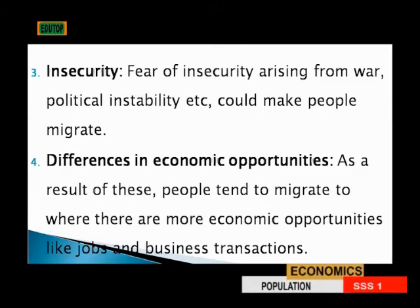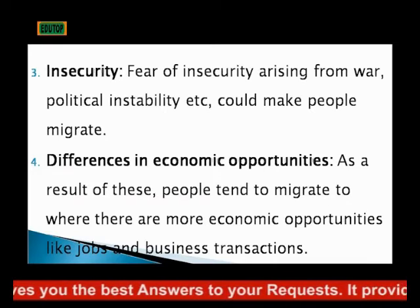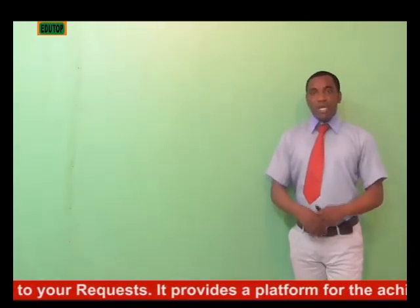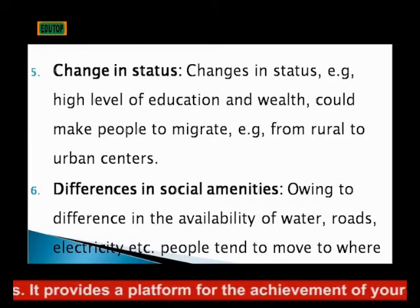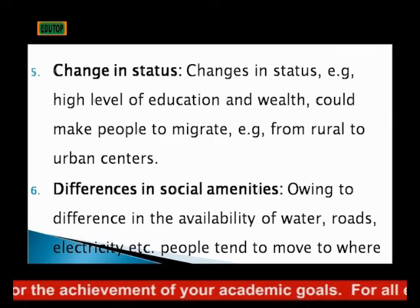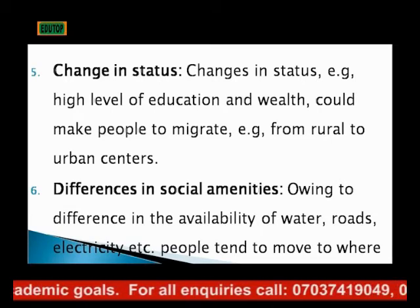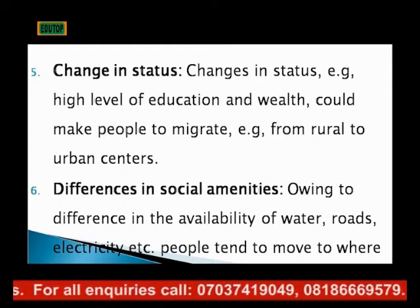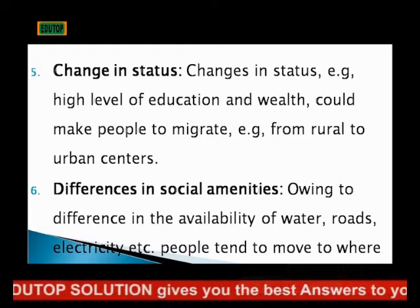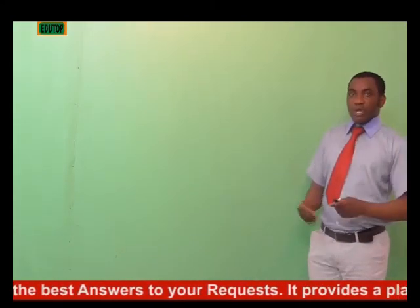Also, we have differences in economic opportunities. As a result of this, people tend to migrate to where there are more economic opportunities like jobs and business transactions in order to get better opportunities. Then we have change in status. Changes in status such as high level of education and wealth could make people migrate from rural areas to urban centers. Then we have differences in social amenities such as water, good roads, and stable electricity, which cause people to move to more favorable and comfortable places.